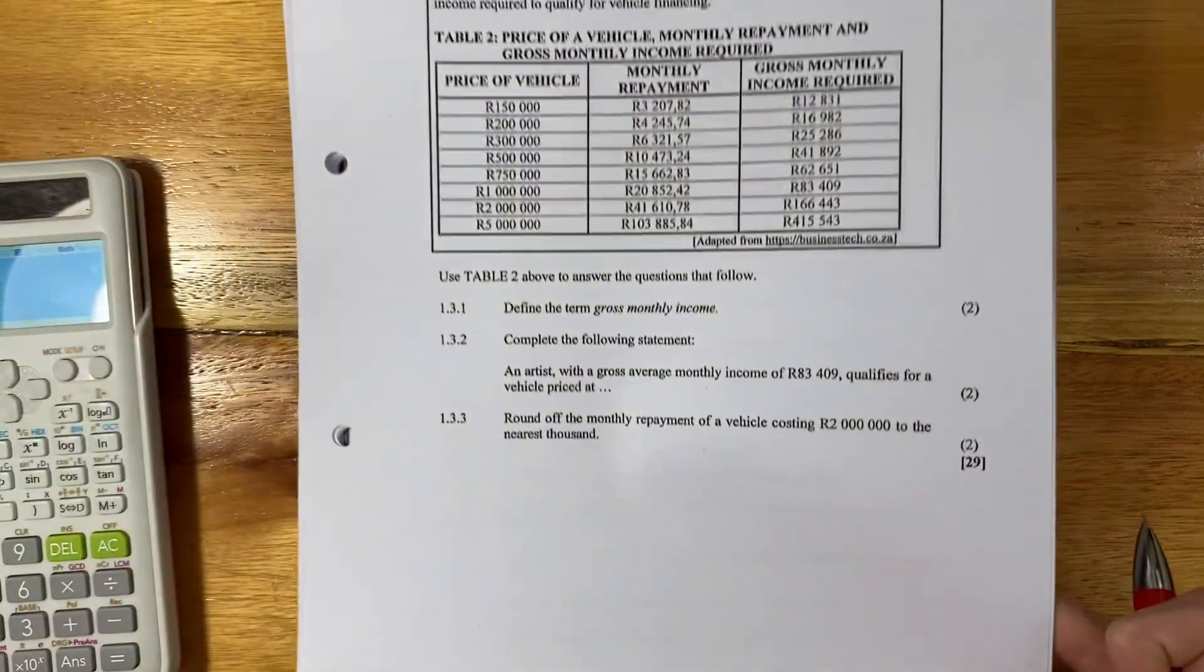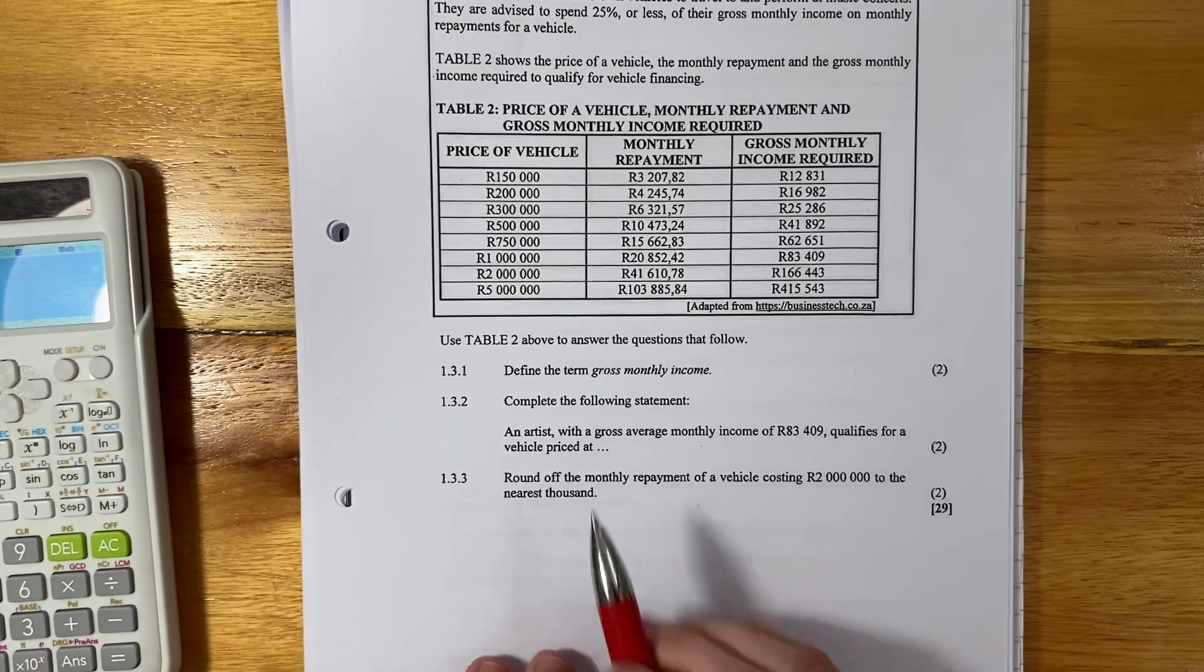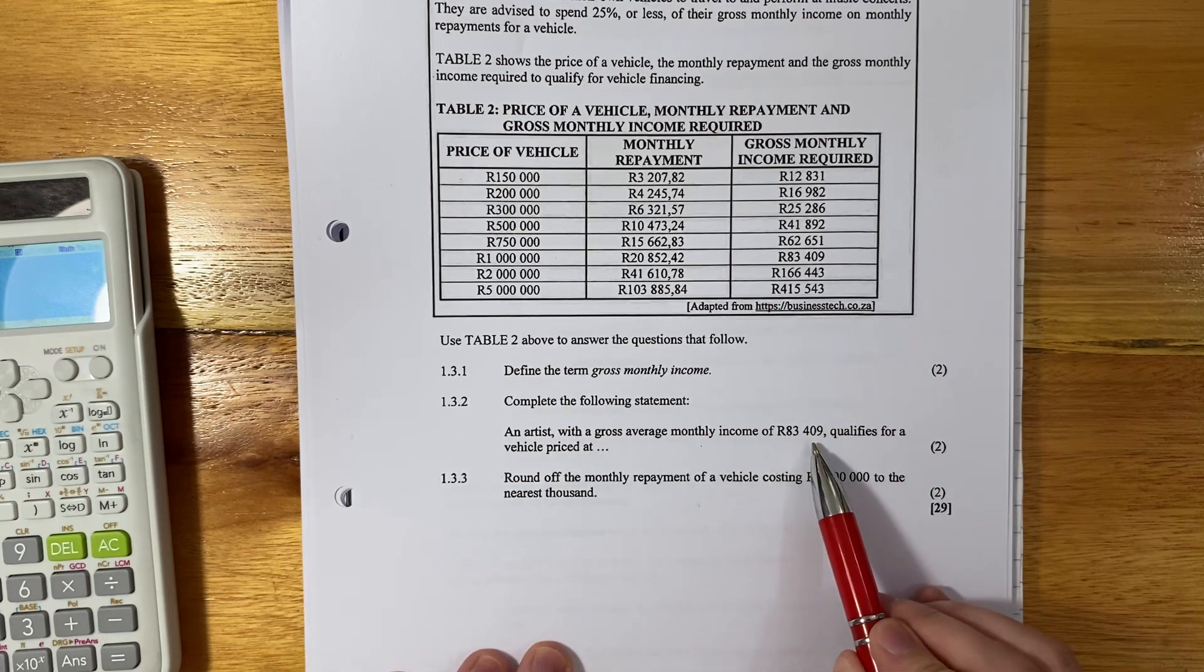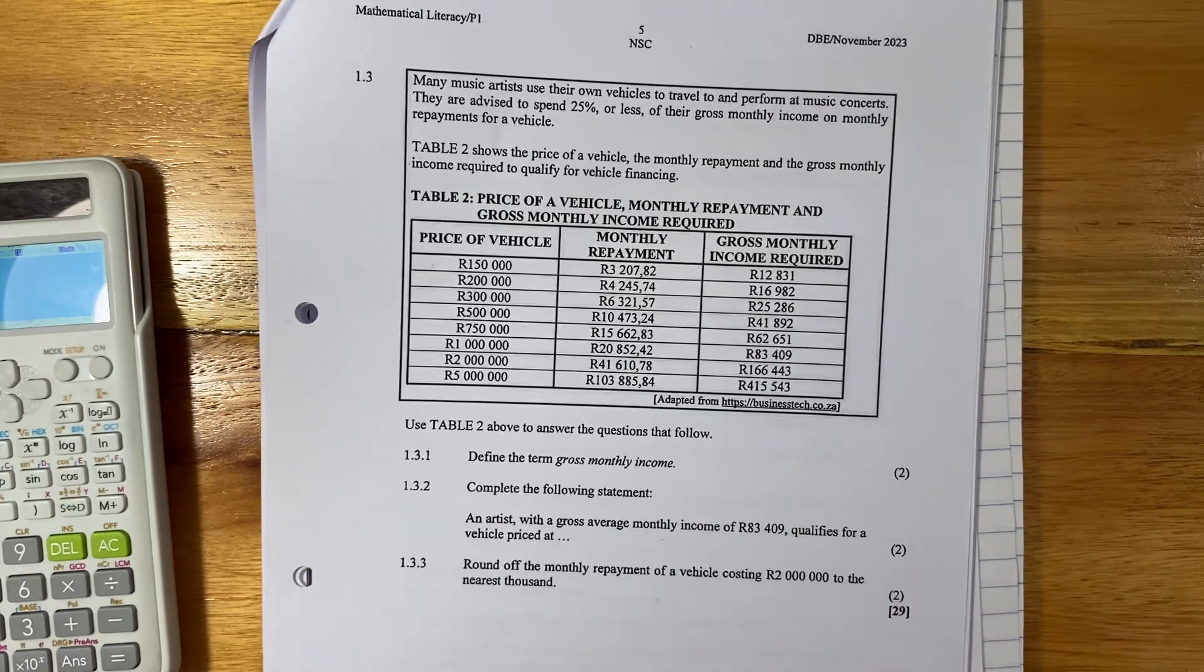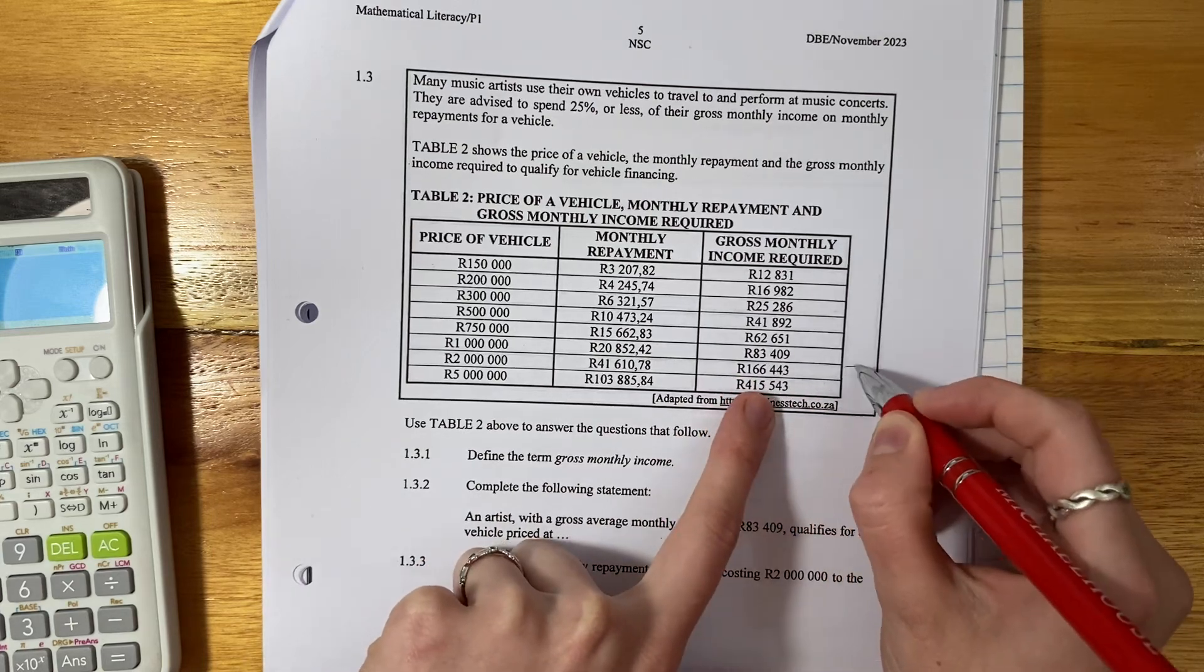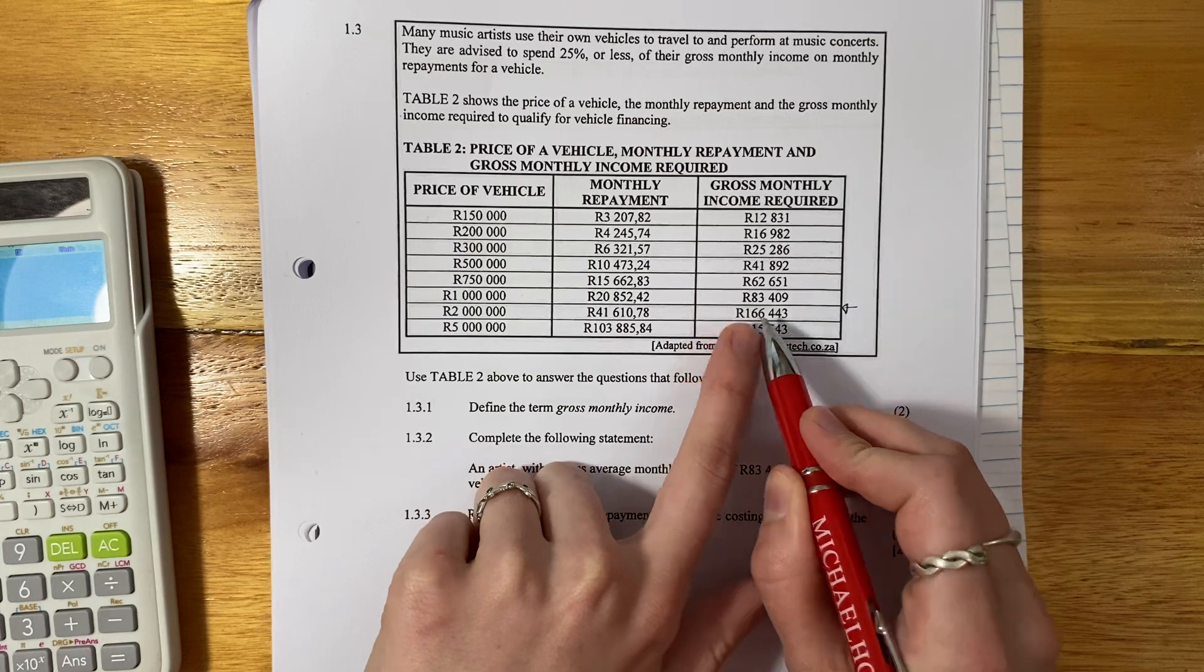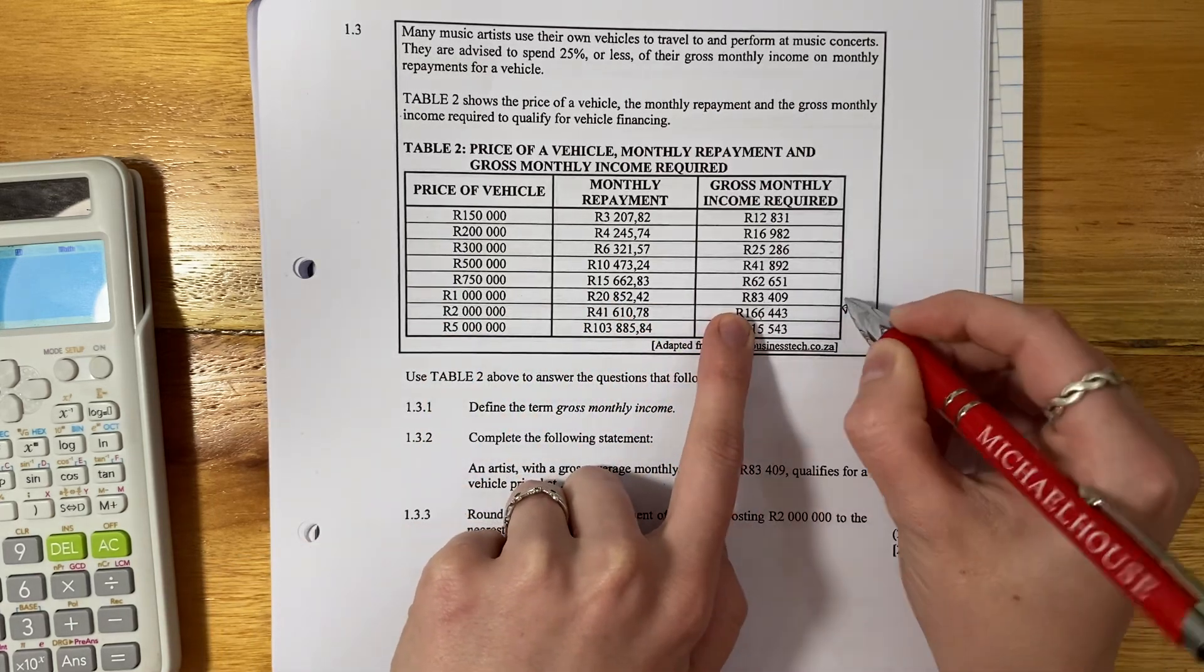Let's then look at 1.3.2. Complete the following statement: An artist with a gross average monthly income of R83,409 qualifies for a vehicle priced at dot dot dot. Now, monthly income, this person would be sitting kind of in between these two. They don't earn this much. So we know that they don't qualify there. They earn a bit more than this. It's fine. It means that they qualify here.